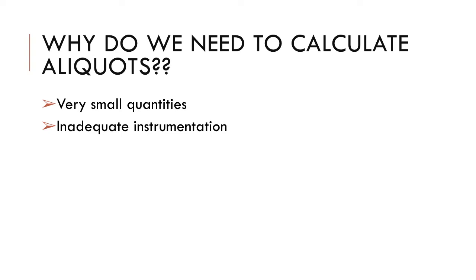So why would we need to use the aliquot method? Using aliquot parts allows us to make very precise measurements. We might have a very small quantity of a medication that we need, or we might want to make a more precise measurement than what our tools allow us to. When a pharmacist needs a degree of precision in measurement that's beyond the capacity of their balance or whatever instrument is at hand, you might decide to get that desired precision by calculating or measuring in terms of aliquot parts.